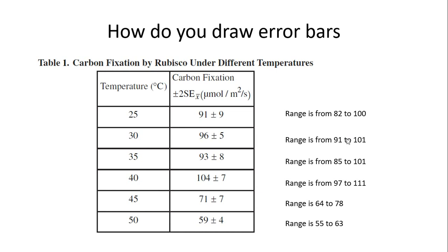So how do you make error bars? Here's a question from one of the more recent AP exams. They give you a table showing the carbon fixation occurring by rubisco under different temperatures — ranging from 25 up to 50 degrees Celsius. The rate of carbon fixation was calculated plus or minus two standard errors of the mean (SE with subscript x-bar). So although they got a number of 91, the standard error shows a plausible range from 82 to 100.